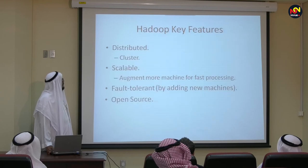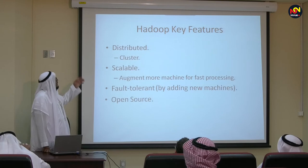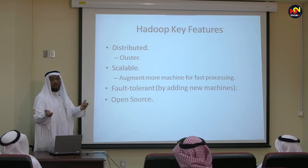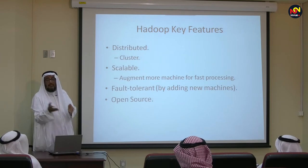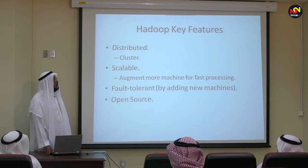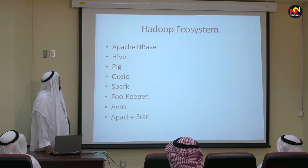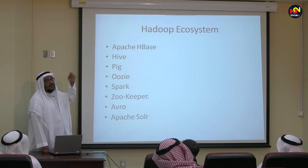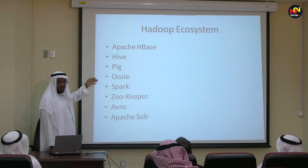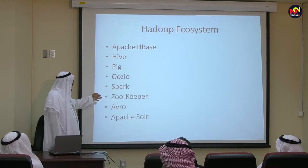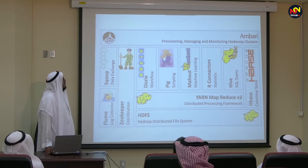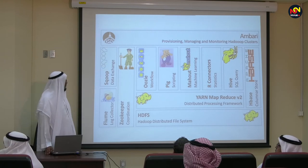What are Hadoop's key arguments? Any tool — for example, if you want machine learning, there is machine learning you can use via Mahout. It is also fault tolerant by adding replications for the data. It is open source — Apache Hadoop — started by Yahoo. Now we have the Hadoop ecosystem, shown in the diagram at the beginning. It consists of Apache HBase for database, Hive, Pig, Oozie, Spark, ZooKeeper, Avro, and Apache Solr. These are all technologies that can be used. There is also Ambari — an interface for the tools.